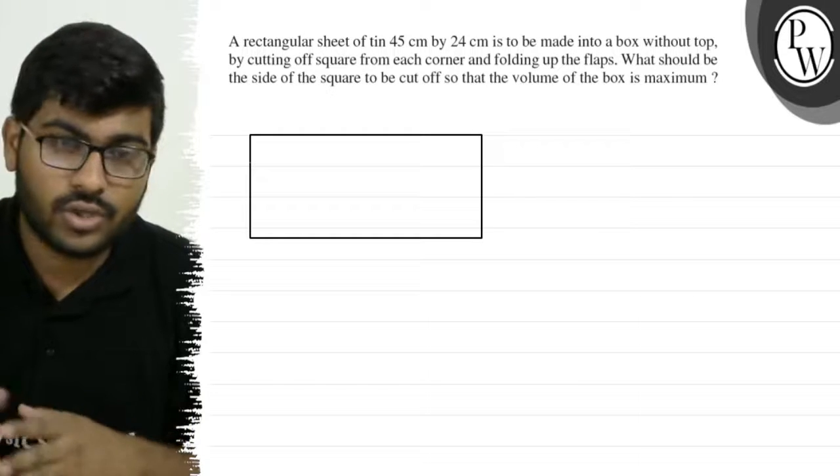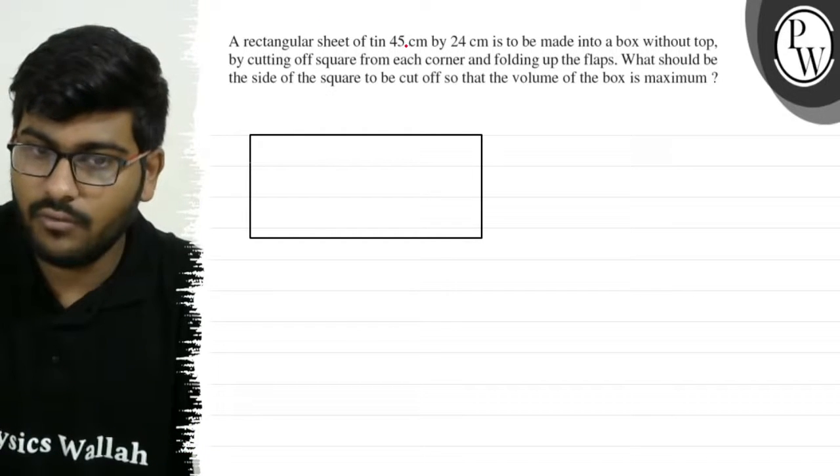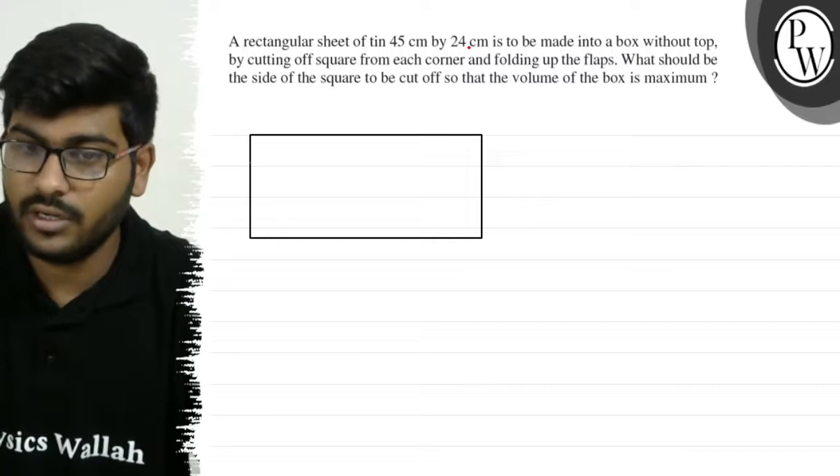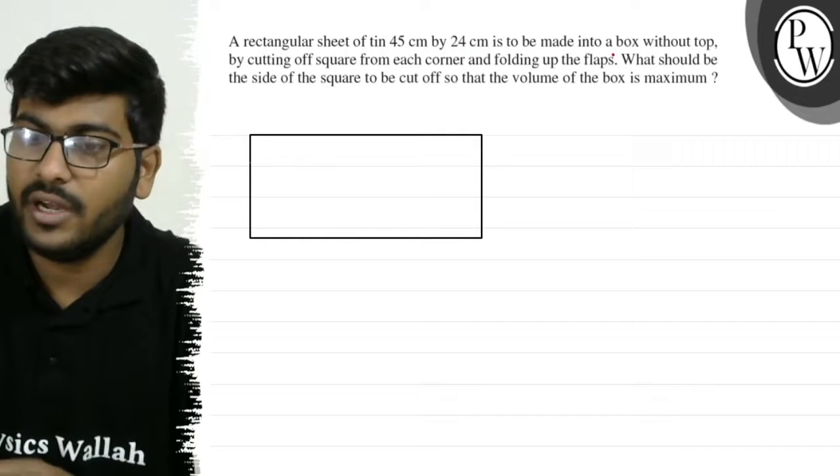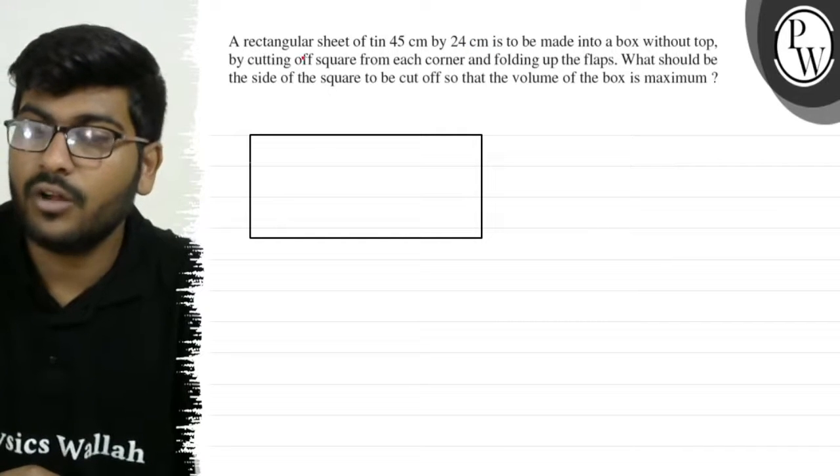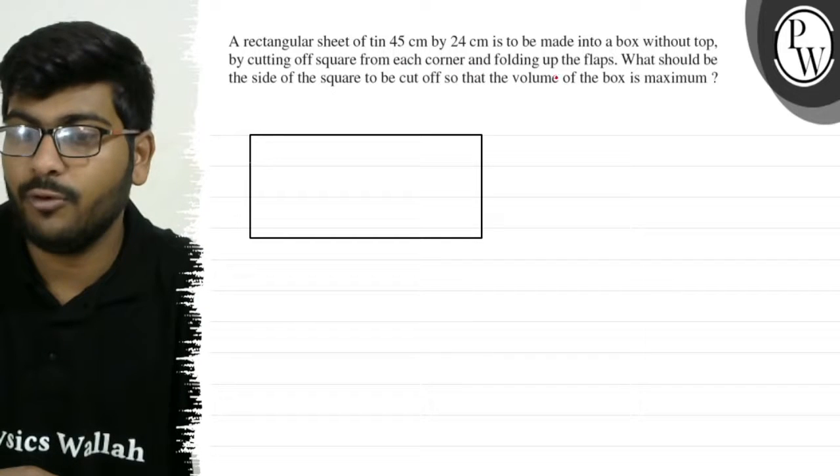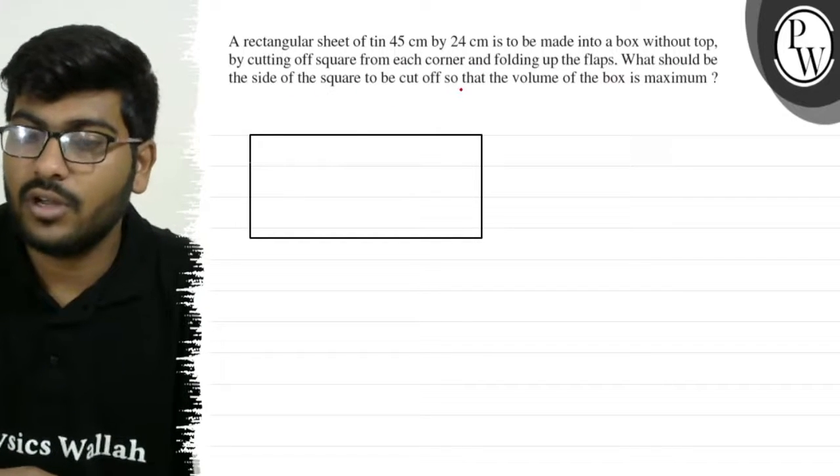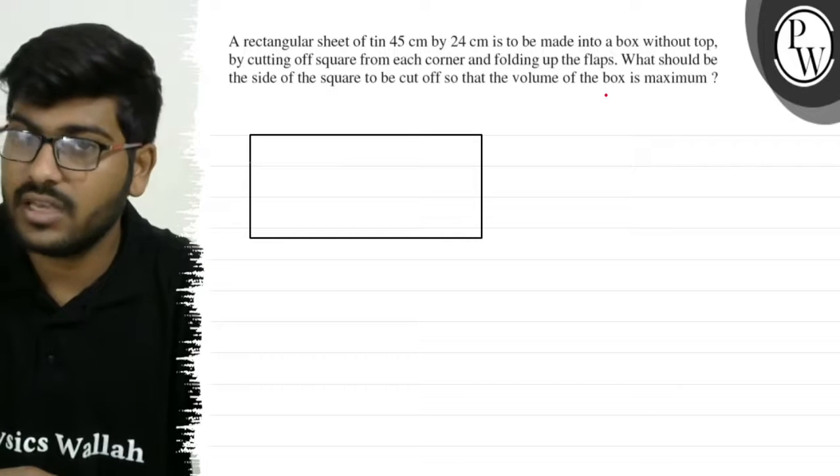Hello, let's see this question. The question says that a rectangular sheet of tin, 45 cm by 24 cm, is to be made into a box without top by cutting off a square from each corner and folding up the flaps. What should be the side of the square to be cut off so that the volume of the box is maximum?